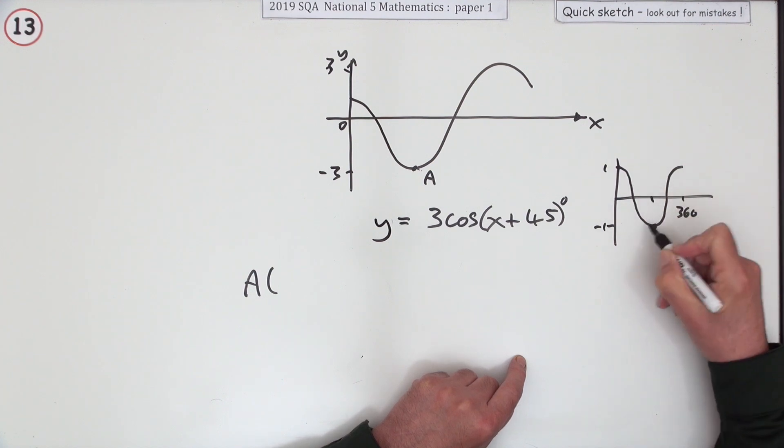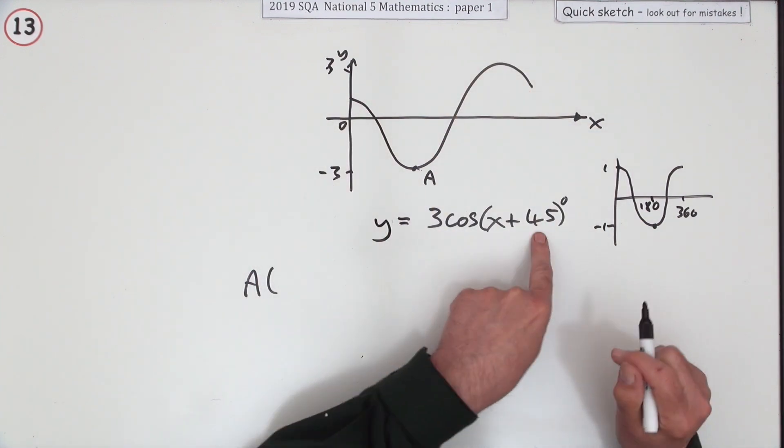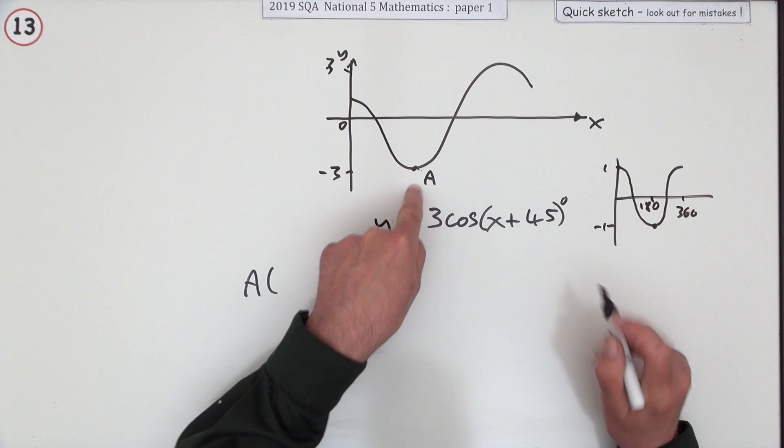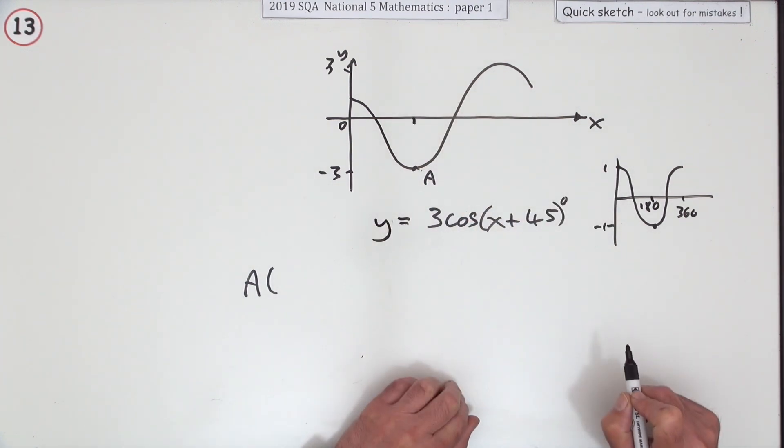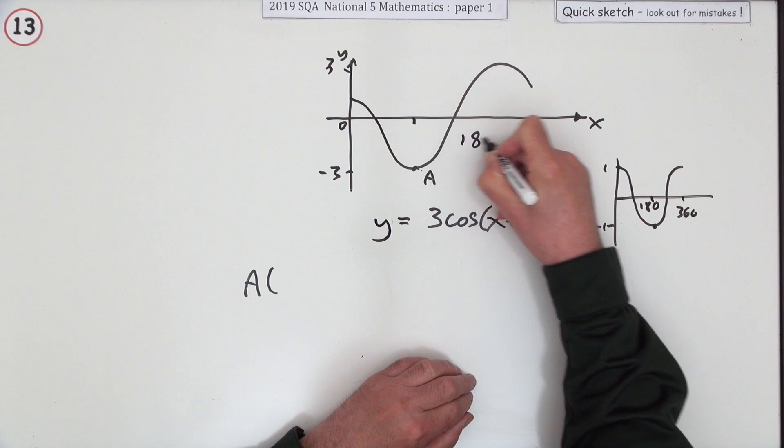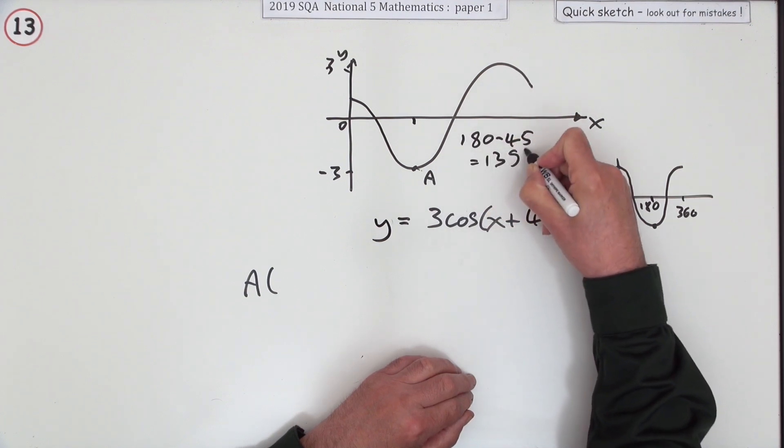The other thing in a normal cosine graph is it should hit the middle, it should be down at the lowest at 180 degrees. This has been shifted back, it's been shifted back by 45 degrees. So at this point here that should be 180 minus 45, which is 135 degrees.